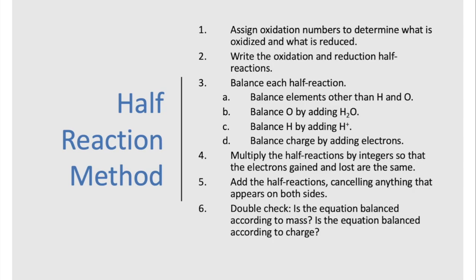The half-reaction method is a precise method that has a series of steps that you have to follow in order. First, we assign oxidation numbers and figure out what gets oxidized and what gets reduced. Then we separate them into oxidation and reduction half-reactions. When we balance the half-reactions, we have a series of four steps: balance everything that's not hydrogen and oxygen the normal way with coefficients, then balance oxygen by adding water, balance hydrogen by adding protons, and finally balance charge by adding electrons. Once we have both half-reactions, we multiply them by integers so the electrons gained and lost are the same.